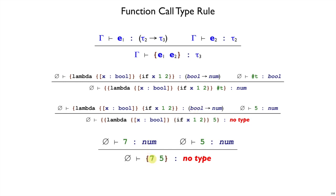And of course when we have 7 applied to 5, there's not even an arrow as the result of the recursive call, so we can't use that rule to give it a type.